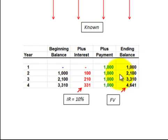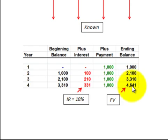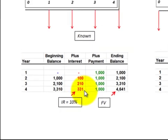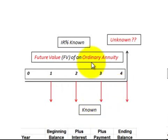The ending balance includes the beginning balance plus interest expense or revenue plus the payment received at the end of the year. The ending balance of year two becomes the beginning balance of year three, and we repeat that process through year four. After adding up these four payments plus the interest received or paid on those annuity payments, we get an ending balance of $4,641. To summarize: for an ordinary annuity, payments at the end of the period are known, along with the interest rate and number of payments, and we calculate that future amount.